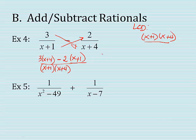Then I distribute and reduce. So I have 3x plus 12. Distribute the negative 2 minus 2x minus 2. Bottom, I'm going to FOIL it. x squared plus 4x plus x plus 4. And lastly, I need to reduce this. So 3x minus 2x is x. 12 minus 2 is 10 over x squared plus 5x plus 4. That is my reduced answer. That is how you subtract rationals.